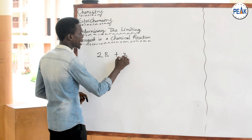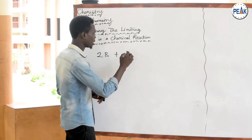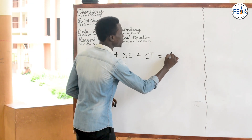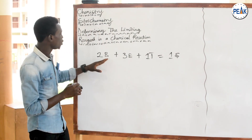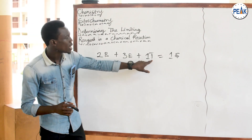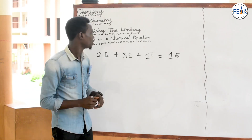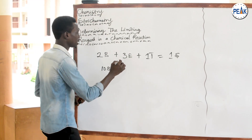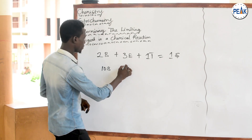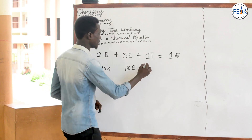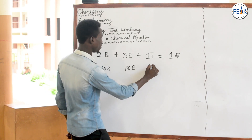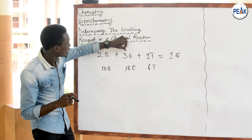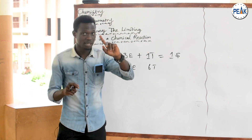three eggs, and one piece of tomato — together we make a sandwich. So: two loaves of bread plus three eggs plus one piece of tomato gives one sandwich. How many sandwiches can I get from 10 loaves of bread, 18 eggs, and 6 pieces of tomato?